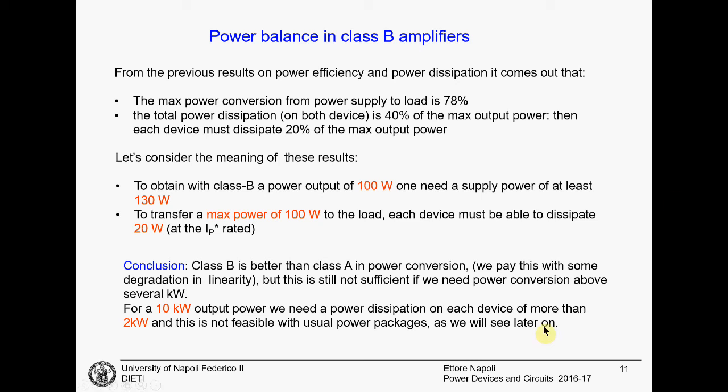And if we put some numbers and we want a power output of 100 watts, you need a power supply of at least 130 watts. That is not bad. And to dissipate a maximum of 100 watts on the load, you need two devices, each one able to dissipate 20 watts. Much better than before.